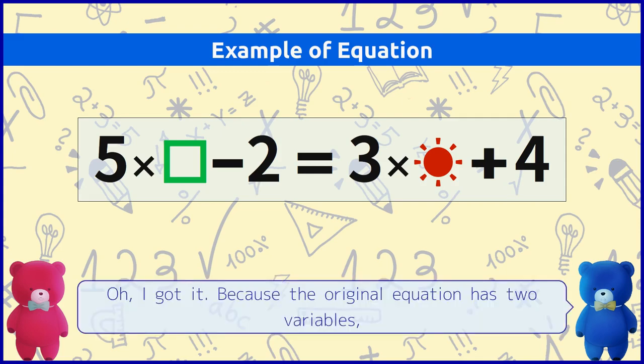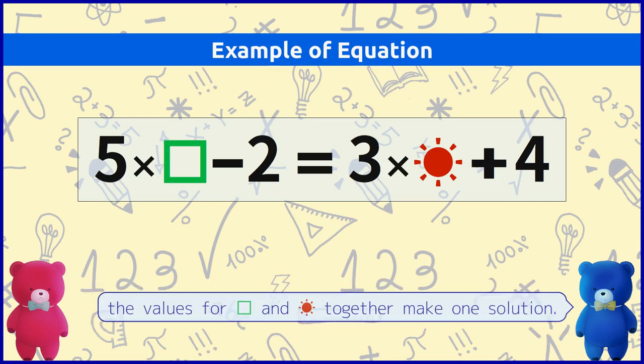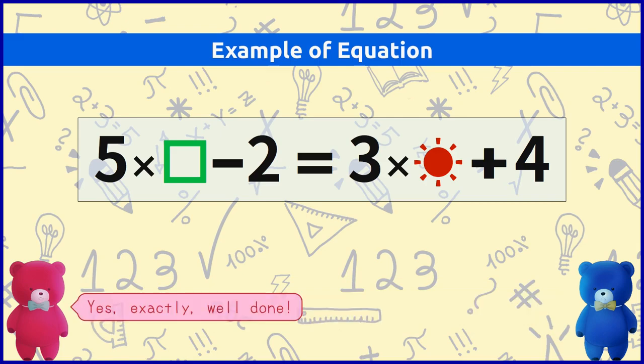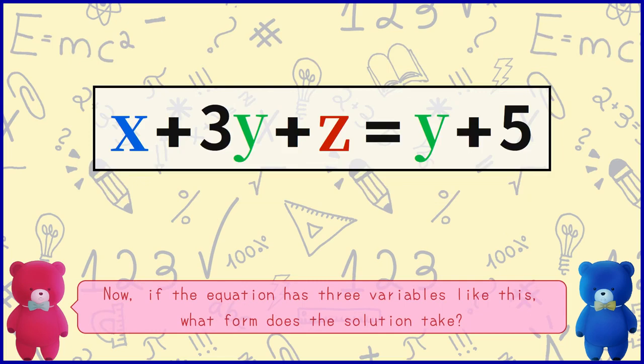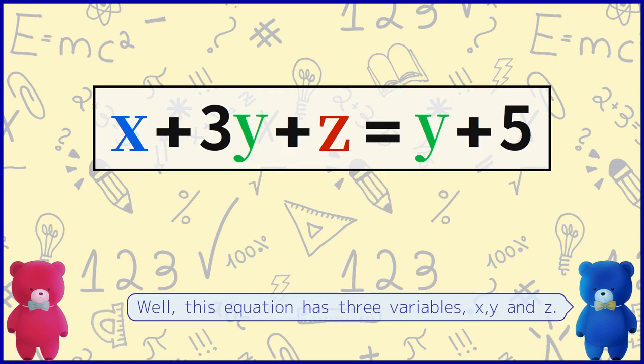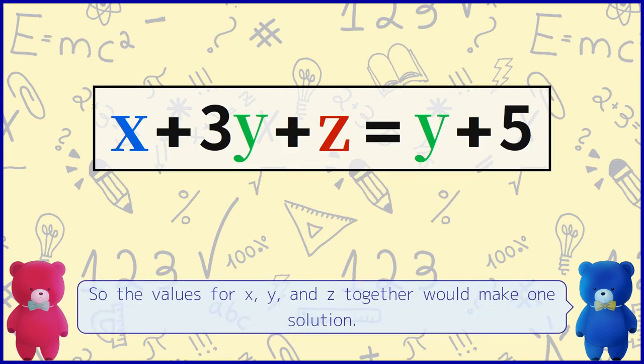Oh, I got it. Because the original equation has two variables, the values for square and sunshine together make one solution. Yes exactly. Well done. Now, if the equation has three variables like this what form does the solution take? Well, this equation has three variables x, y and z. So the values for x, y and z together would make one solution. Yes, great answer.